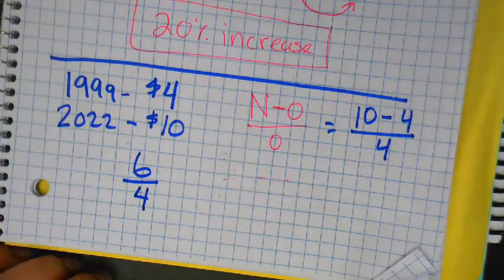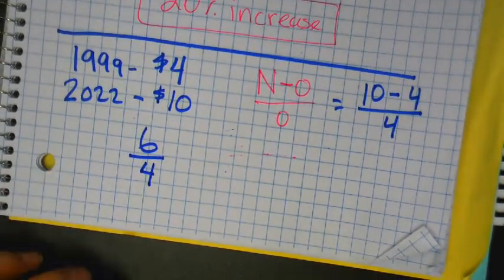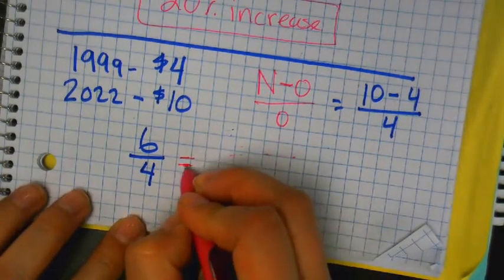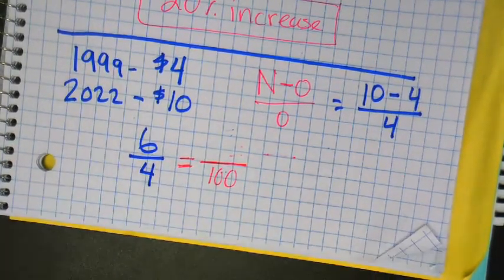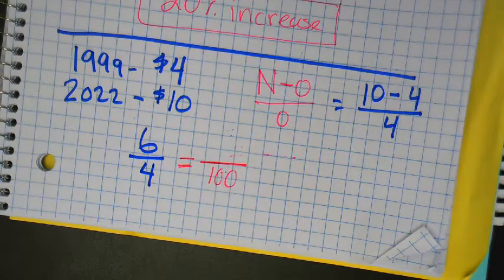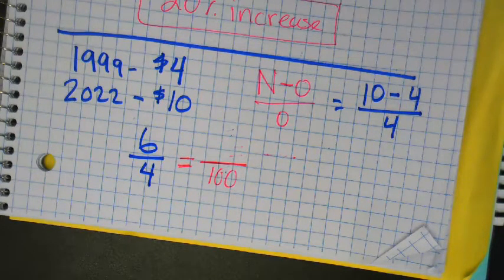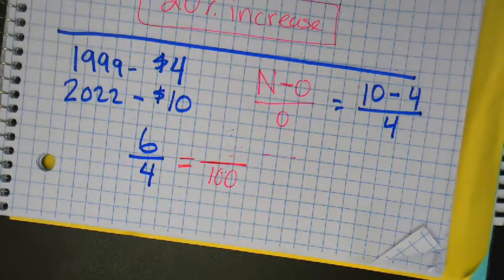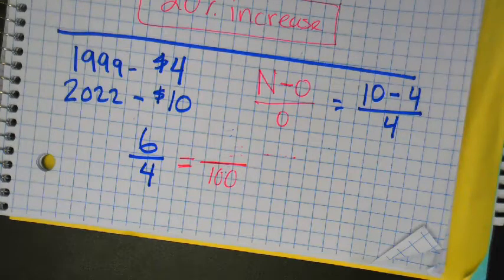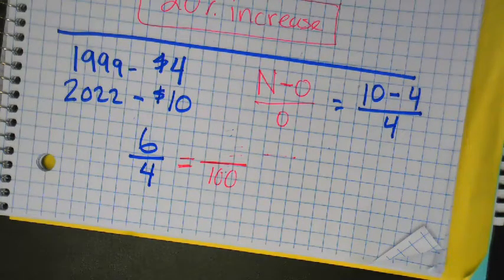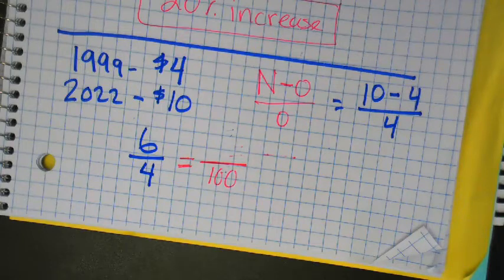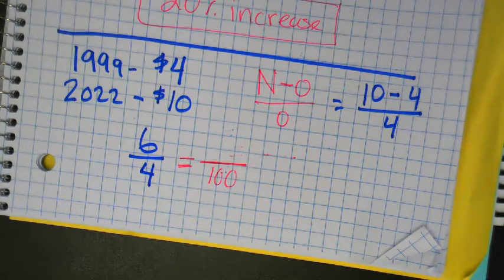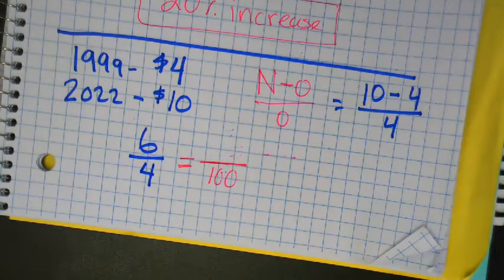First step, plug in your numbers. Second step, subtract. So what's 10 minus 4? 6 over 4. Now, what do I do? Focus on this. Now what do I do? Set it equal to 100. Okay, finish it out. Let's focus on this, not on your neighbor. You need to try to do one step ahead of me. If you have your multiplication table, use it. So 4 times what is 100? 4 times 25. Okay, so multiply the top by 25.